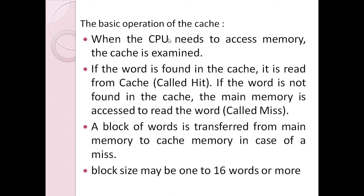Now let us see how the basic operations of cache memory are performed. When the CPU needs to access memory, the cache is examined first. If the required word is found in cache, it is called a hit. If the word is not found in cache, it is called a miss, and the data is then taken from main memory.